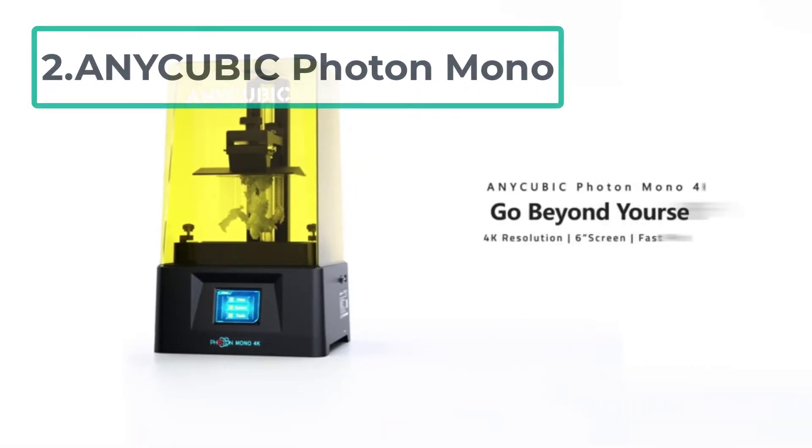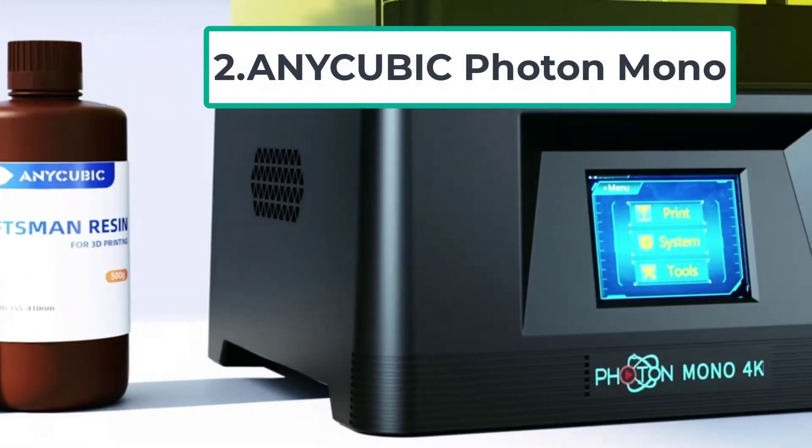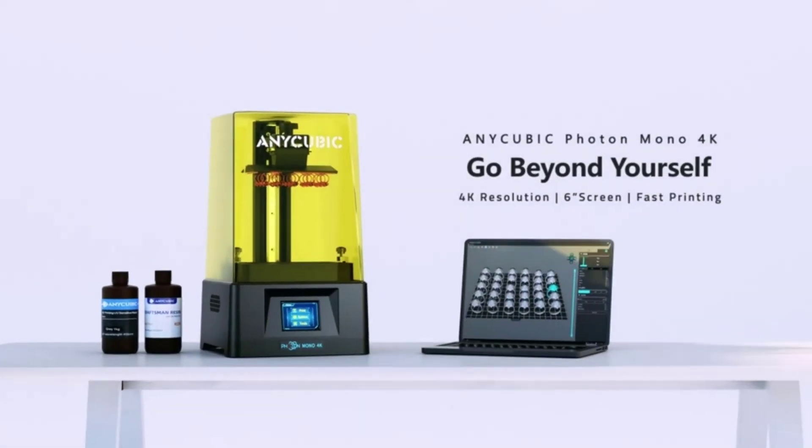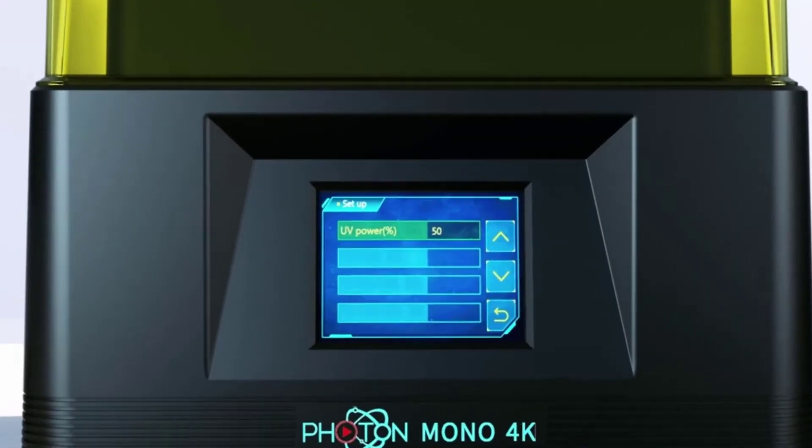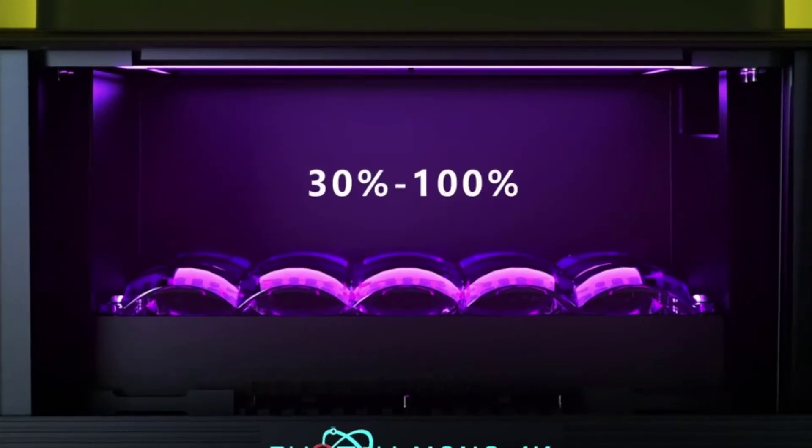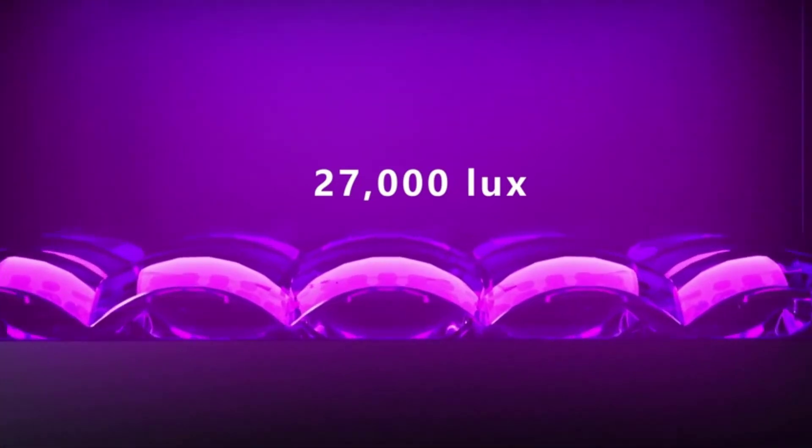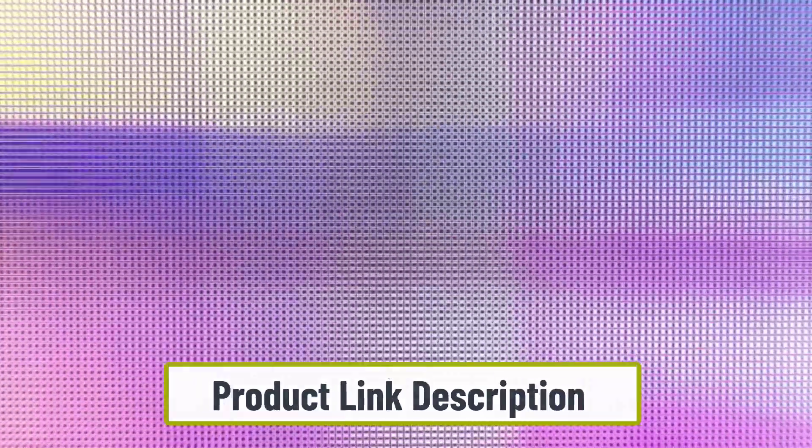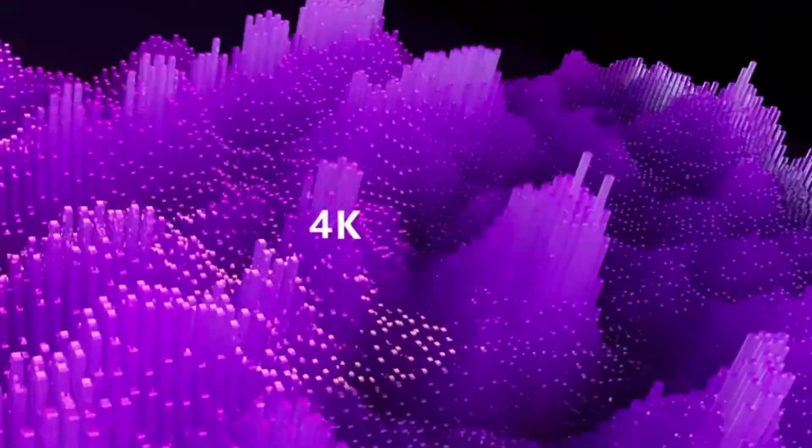At number 2, Anycubic Photon Mono. The Anycubic Photon Mono is a good, cheap 3D printer. With its 130x78x165mm build volume, 2560x1620 pixels resolution, and 1-2 second layer curing time along with a 50mm per hour maximum printing speed, the Photon Mono is a cost-effective SLA printer that doesn't compromise on quality. Its 51 micron XY resolution results in lovely prints.